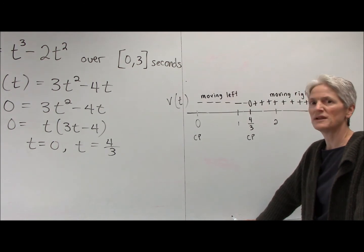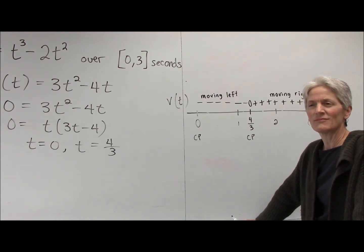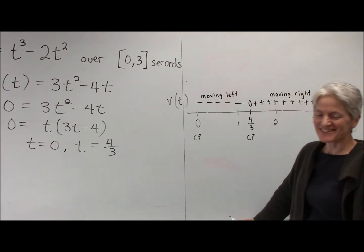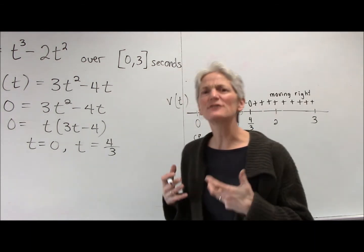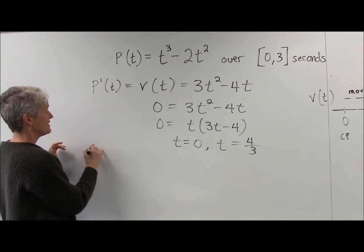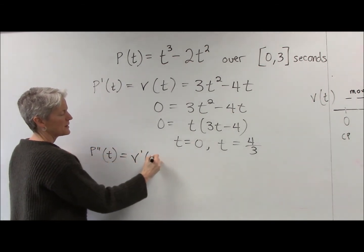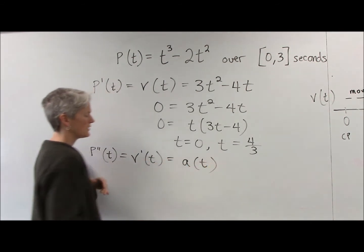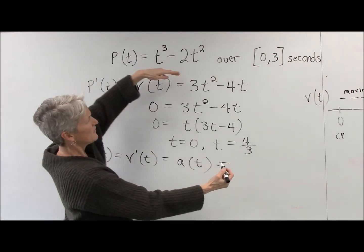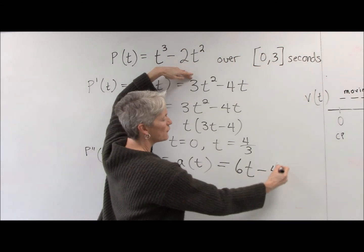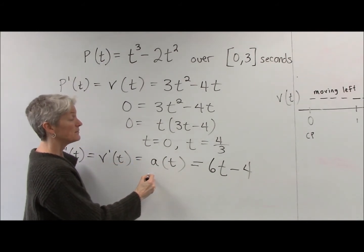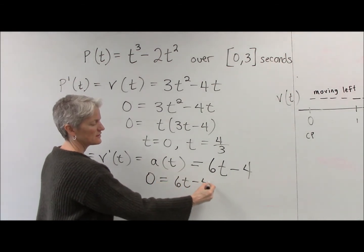Here's the next question: when is this particle speeding up and slowing down? How am I going to change velocity? What do I call that? Well, that would be acceleration. So let's talk about acceleration. The acceleration is going to be the derivative of my velocity, or the second derivative of my position function. The second derivative of my position function is acceleration, as is the first derivative of my velocity. So let's take the derivative of my velocity — that gives me 6t minus 4. It might be useful to find potential inflection points and analyze when my acceleration is positive and negative, so I'll set that equal to zero.